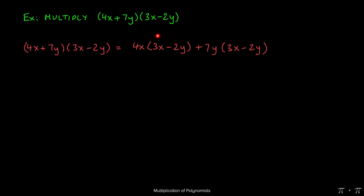At this stage we've turned this massive problem into something far more manageable. We can certainly distribute the 4x into both of these terms, and we can also definitely distribute the 7y into both of these terms.